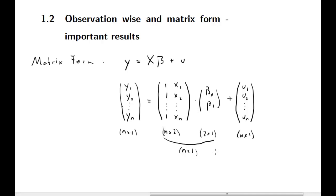You know from semester one that the OLS estimate beta hat is (X'X)^{-1} X'y. This formula you have to know in your sleep. So that was the matrix form.